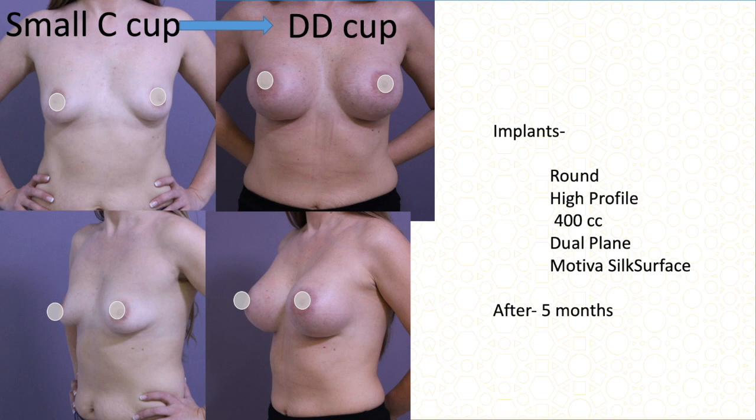This is a small C cup thinner patient who wanted more fullness and had already decided on 400 cc. When I measured the diameter I agreed to do 400 cc but warned her that in future she may have more stretching or sagging and may need a lift. For now she was happy — 400 cc high-profile dual-plane implant — and this is five months after surgery, from C cup to double D cup.